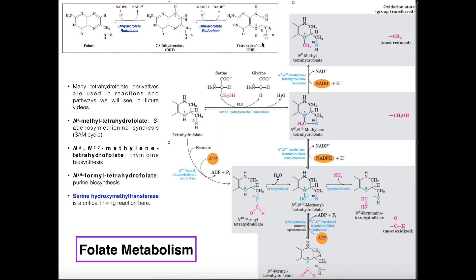Humans cannot biosynthesize tetrahydrofolate. This is something we have to obtain through the diet, and it's going to be obtained as folate, or sometimes referred to as folic acid. Before folic acid can actually be used, it has to be converted to tetrahydrofolate. This is accomplished through two successive reactions of dihydrofolate reductase: first folate is reduced with NADPH to dihydrofolate, and then it's reduced a second time, again with NADPH, to tetrahydrofolate. This is done in the liver once that folate has been absorbed, and then the tetrahydrofolate can be processed through this pathway in a variety of ways to generate different coenzymes.